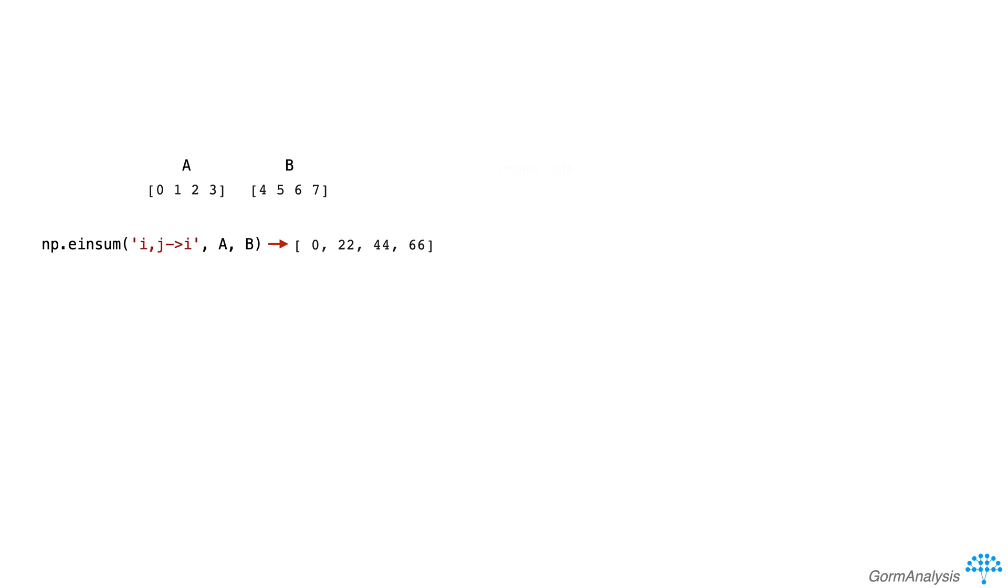So what the hell just happened? In pseudocode, you could describe what just happened as the following: Initialize output as an array of zeros the same size as a. For each i, for each j, output[i] += a[i] * b[j].